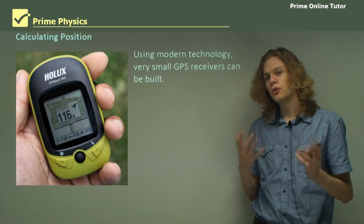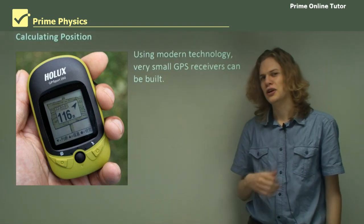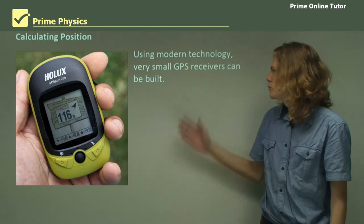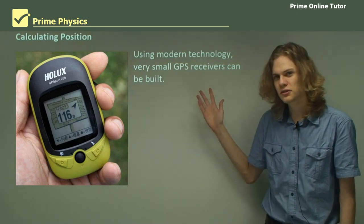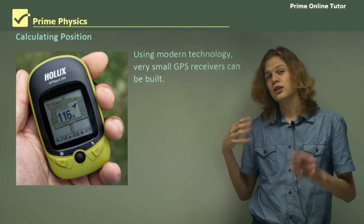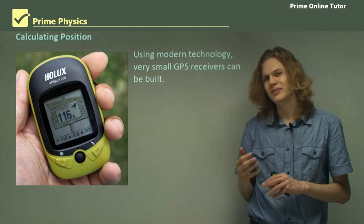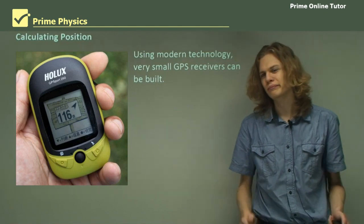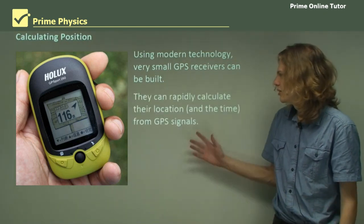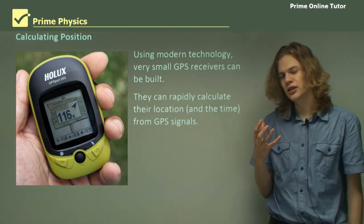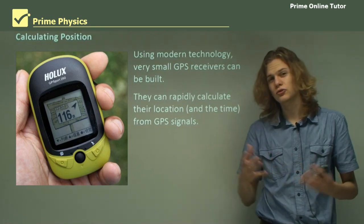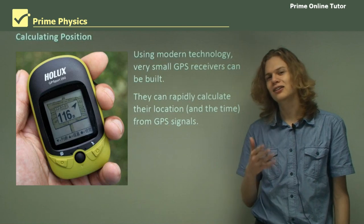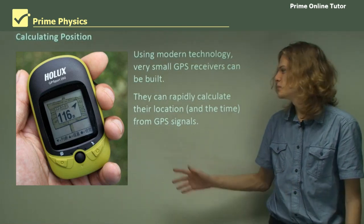Now, if we use modern technology and transistors and microchips and things like that, then we can build very small GPS receivers. The mathematics for trilateration aren't all that complicated. We don't need a supercomputer to do them. So these tiny GPS receivers, once they receive signals from three different satellites, can very rapidly calculate exactly where they are based on the readings from GPS satellites.